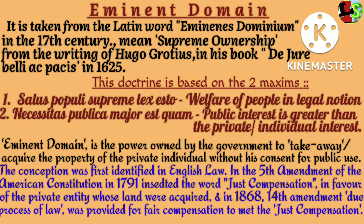The Fifth Amendment of the US Constitution in 1791 used the term 'just compensation' in favor of the private entity whose land was acquired by the government. Further, the Fourteenth Amendment in 1868 provided due process of law to the parties whose land was acquired, to meet the requirement of just compensation.